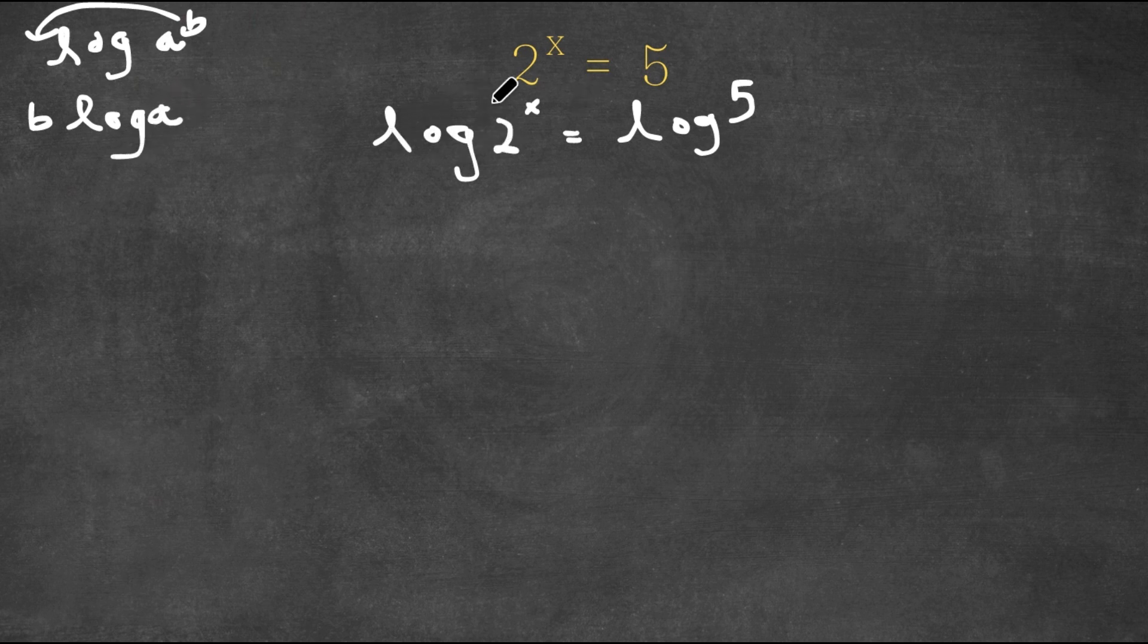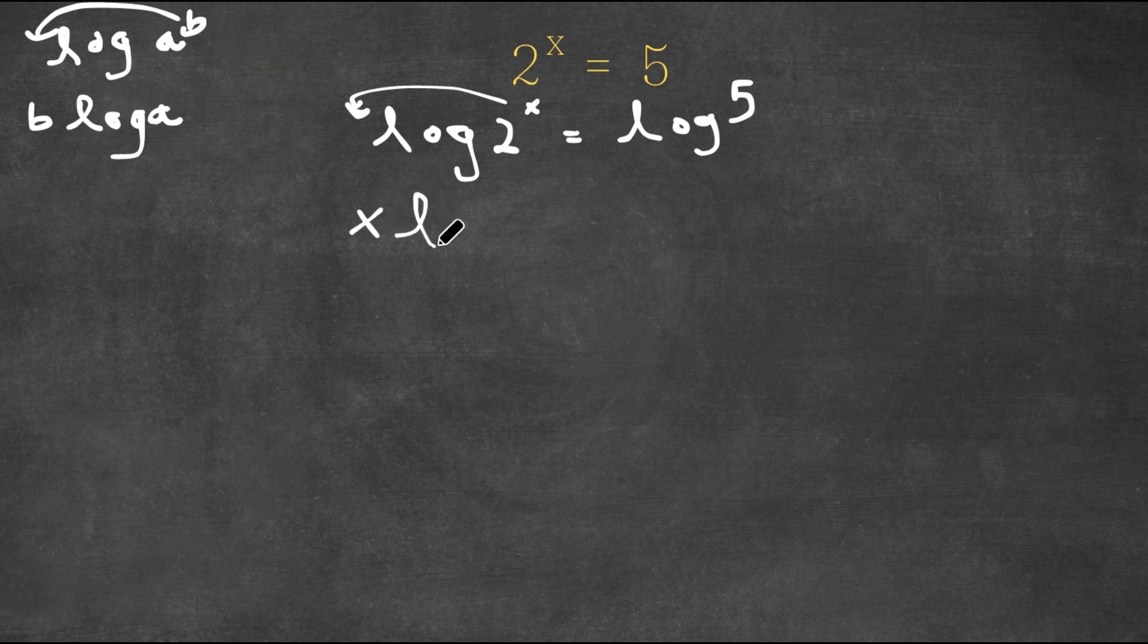So I'm going to do the same thing to log 2 to the power of x. I'm going to move the x to the front of the logarithm. So this would be equal to x times log 2. Now this is equal to log 5.